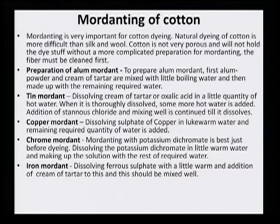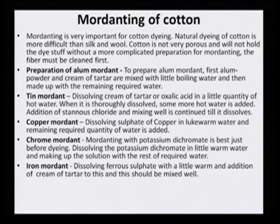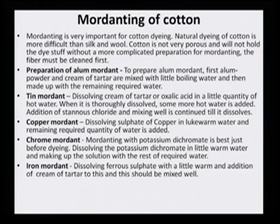Preparation of alum mordant: alum powder and cream of tartar are mixed with a little boiling water and made up to full solution volume. Alum mordant uses sodium potassium alum or aluminum sulphate with cream of tartar as a modifier. For tin mordant: dissolve cream of tartar or oxalic acid in hot water, then add stannous chloride. For copper mordant: dissolve copper sulphate in lukewarm water. For chrome mordant: dissolve potassium dichromate in warm water — best used just before dyeing. For iron mordant: dissolve ferrous sulphate in warm water with a little cream of tartar.